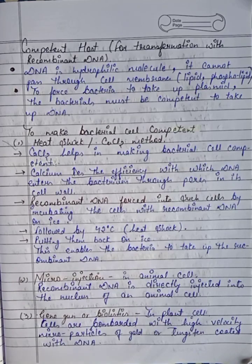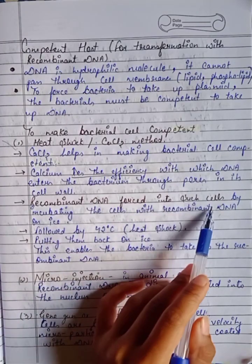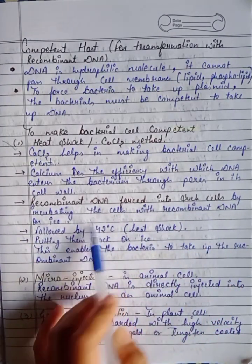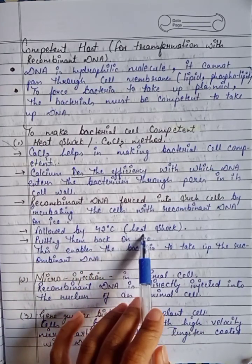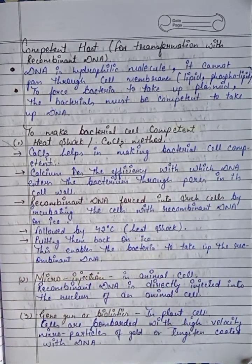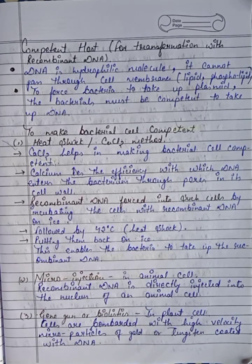Recombinant DNA is forced into bacterial cells by incubating the cells with recombinant DNA on ice, followed by a 42°C heat shock, and then putting them back on ice. This enables the bacteria to take up the recombinant DNA.